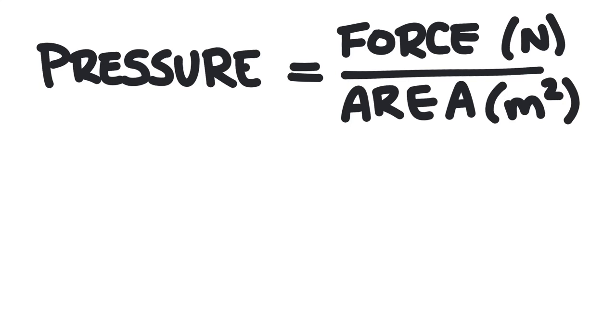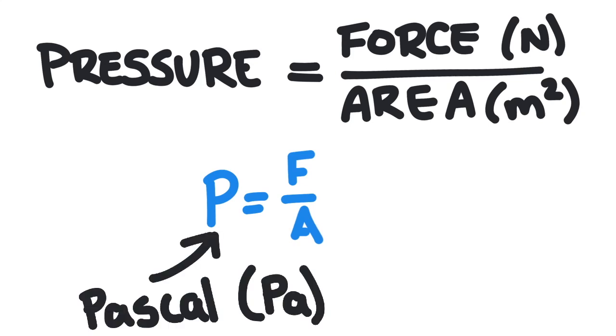The equation to solve for pressure is pressure is equal to force divided by area. The SI unit for pressure is the Pascal, Pa. Although, Pascals are a pretty small unit, and pressure is more commonly described in kilopascals or kPa.